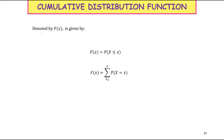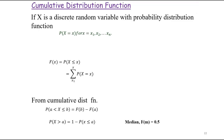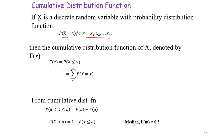The cumulative distribution function, denoted by F(x), is given by F(x) = P(X ≤ x). If x is a discrete random variable with probability distribution P(X = x) for x = x1, x2, ... xn, then the cumulative distribution function F(x) = P(X ≤ x) = summation from x1 up to x of P(X = x).